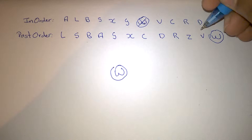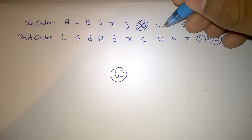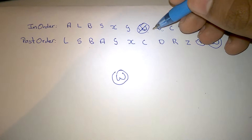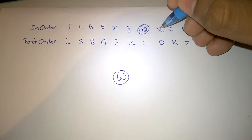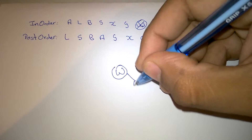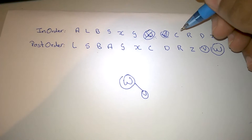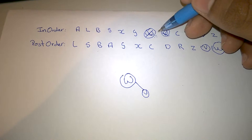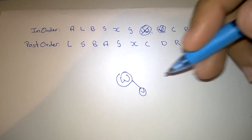So if you take V, you look to see where V is in the in-order, and you'd see that V is to the right of the parent node, which is W. W is V's parent node. So V being to the right of it, you're going to put V to the right. Now you're going to remove V. We have to look at what is to the left of V — which is nothing actually — and there are things to the right of it. So everything now will go to the right of V.